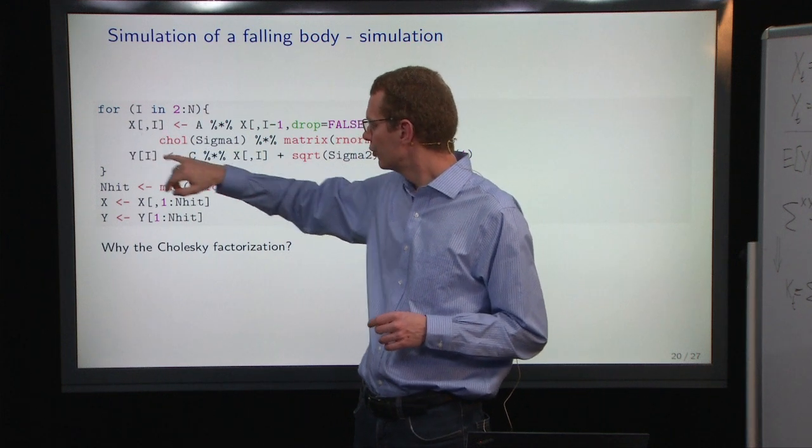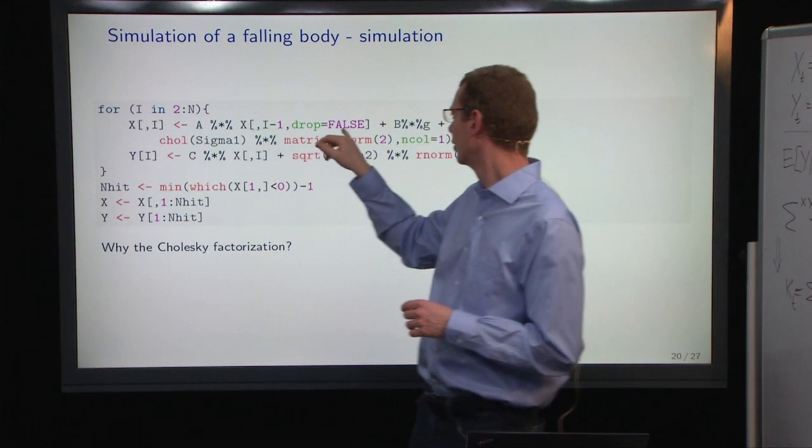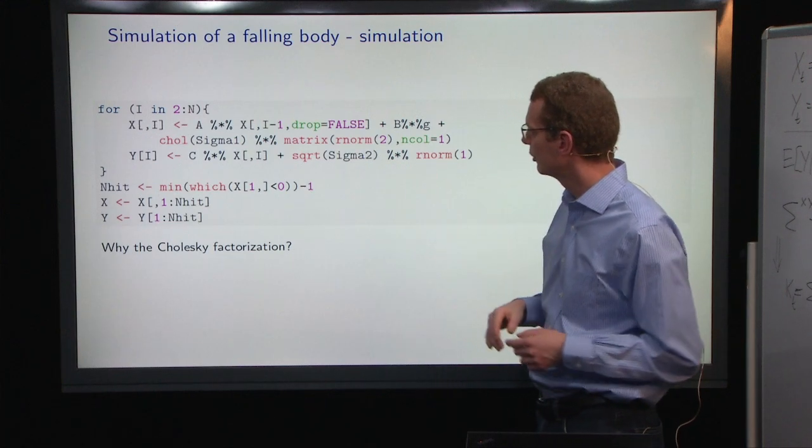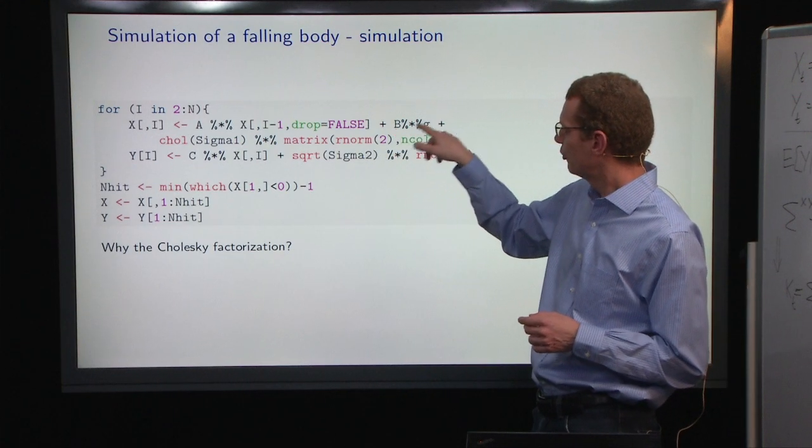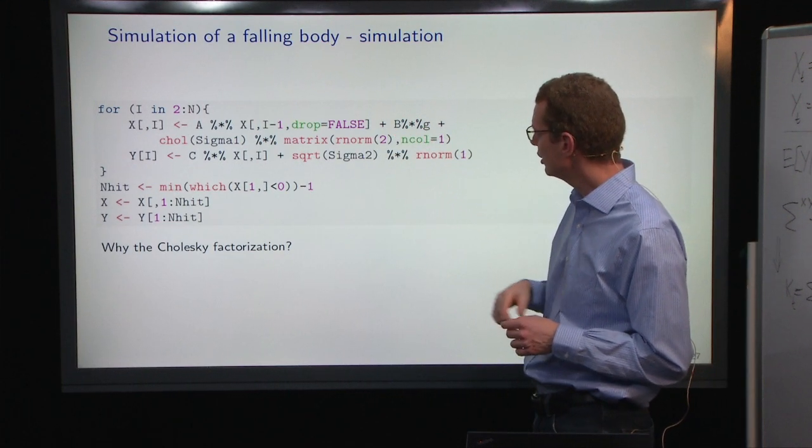I'll do a loop going through the rest of the time steps. I'll take the next X to be A times the previous X. Drop equals false means I keep the dimension structure, plus B times the gravity.